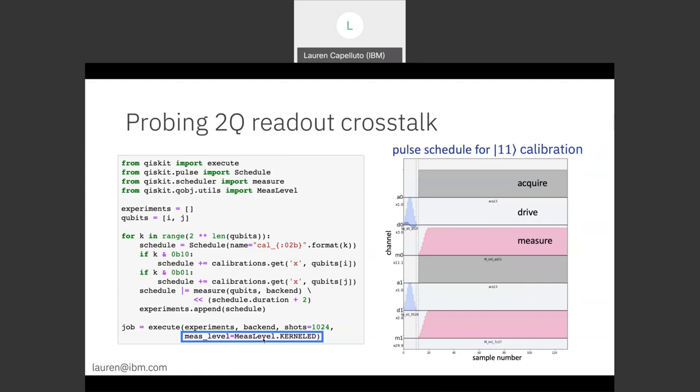On the right, we have an example of one of our pulse schedules, in this case, the 1-1 schedule, where both qubits have been excited and then immediately after measured with the acquisition and measure stimulus pulses.